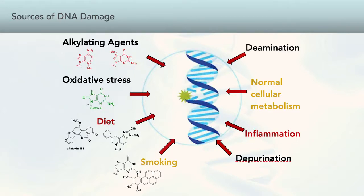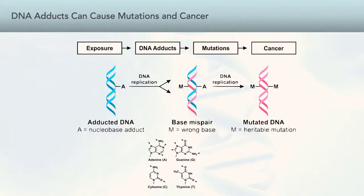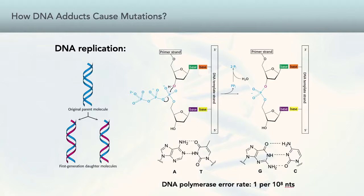Such reactions form structurally modified DNA nucleobases known as DNA adducts. DNA adducts or lesions play a key role in chemical carcinogenesis because of their ability to induce heritable mutations by causing polymerase errors during DNA replication. Such mutations, if found in genes controlling cell growth and proliferation, can lead to cancer.